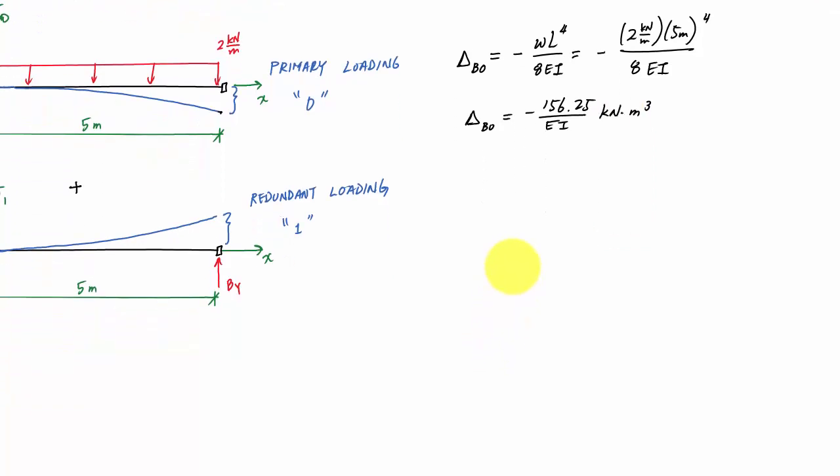And then I would go ahead and do the same for the redundant loading. And again, using my appendix in the back of the book or wherever you have deflection equations for delta B1, I would get here that this is BY*L cubed over 3EI. And it's positive because the beam is going upwards at this point from its original position. And I could rewrite this, and this is BY times 41.67 meters cubed over EI. And basically, we're just finding the deflection B here as a function of BY. So in a way, we're doing it symbolically.